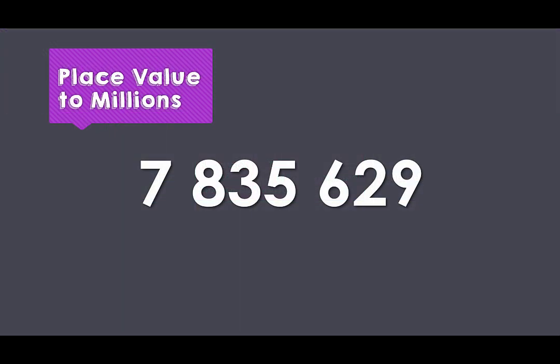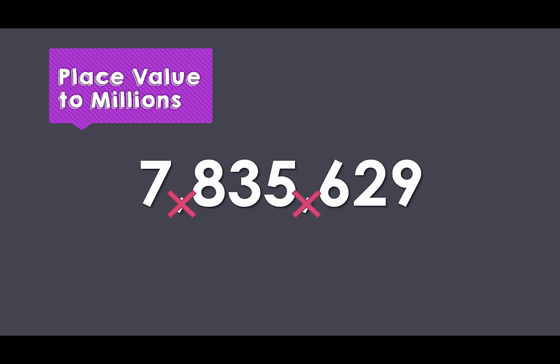Now let's have a look at our number without the place value table. Notice that when we write this number, we include spaces between each set of three digits. Sometimes you might see people write numbers using commas instead of spaces. This can sometimes be confusing because we use commas to list numbers — so have we written seven million, eight hundred and thirty-five thousand, six hundred and twenty-nine? Or do we have seven, eight hundred and thirty-five, and six hundred and twenty-nine? For this reason, we don't use commas within a number. We prefer to use spaces.